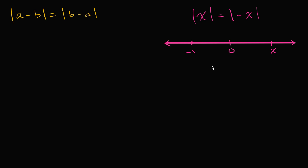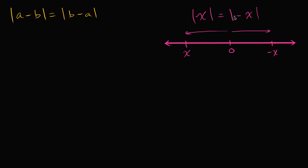Now if X were negative — so if this was X on the number line — then what would negative X be? Well, negative X would be the opposite of it, so it would be the same distance to the right of zero. This looks a bit unusual, but remember X could be negative two, and if X is negative two, then negative negative two is going to be positive. But either way, the absolute value of these two things are the same — the absolute value is just the distance from zero. This distance is the absolute value of X, and this distance is the absolute value of negative X.